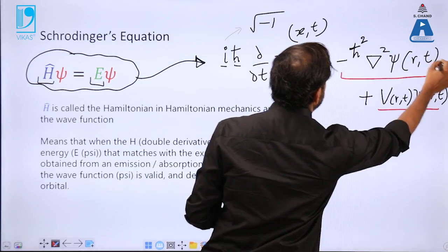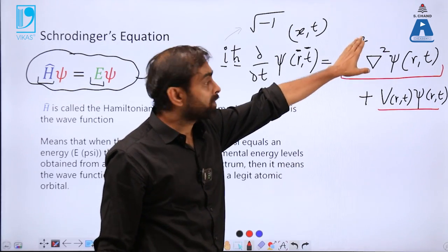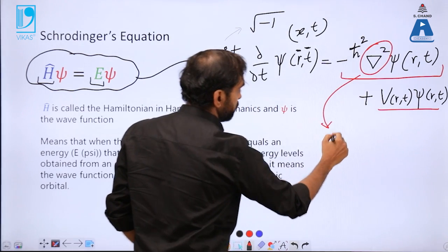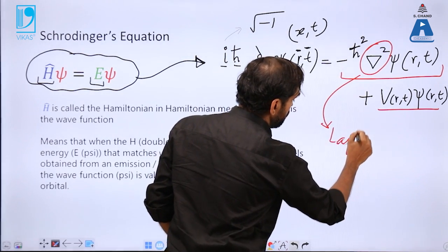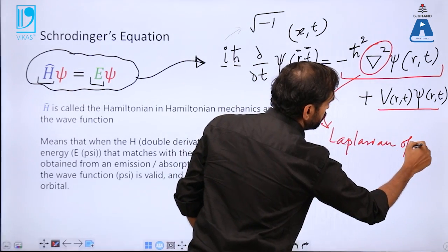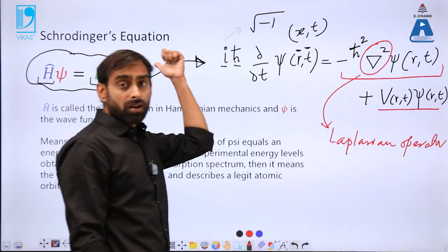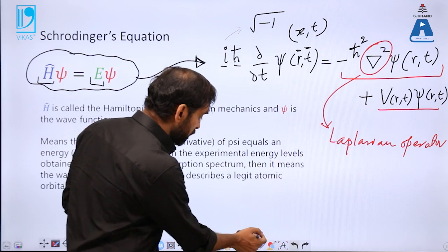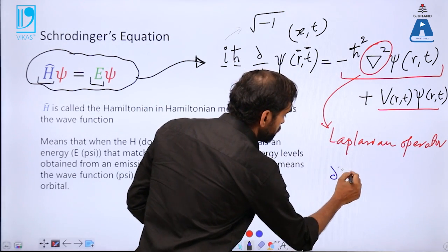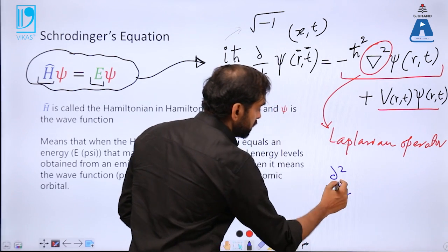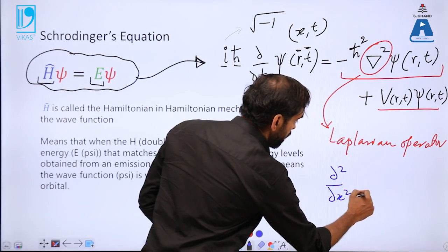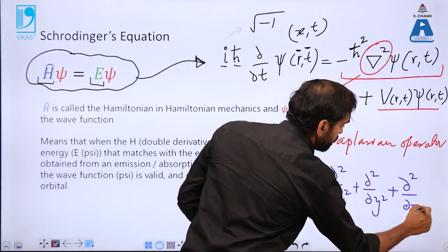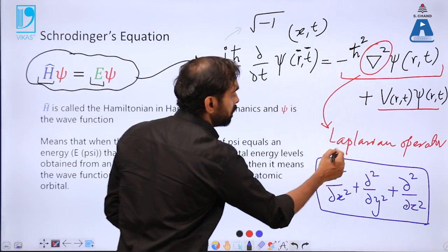Added with another factor—the square of reduced Planck's constant and the Laplacian function. Just like we have an operator in one equation called Hamiltonian operator, we have another operator called Laplacian operator. This is basically the second-order differential, like d²/dx², d²/dy², d²/dz². It is the second-order differential of the specific axis.